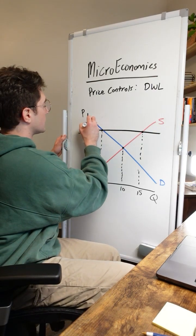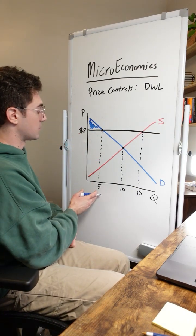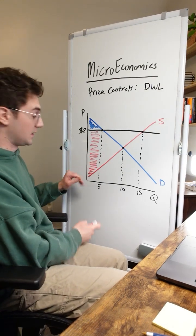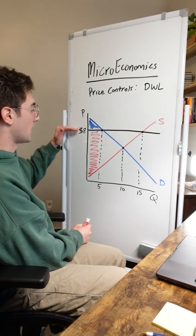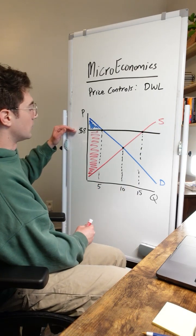So now the consumer surplus triangle only looks like this. It's much smaller now because there's fewer units being sold, and the producer surplus trapezoid looks like this. Yes, these few producers are benefiting from the new higher price, but we're losing out on this market activity due to the floor.